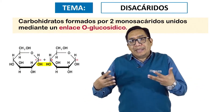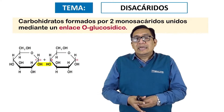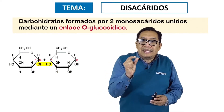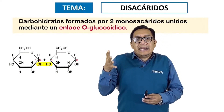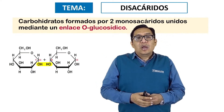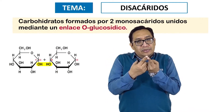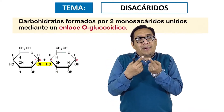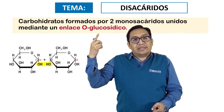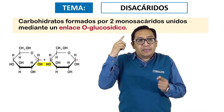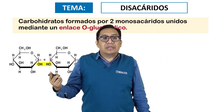Por ejemplo, el almidón, el glucógeno, la celulosa, entre otros más, tienen unos pequeños ladrillos básicos que los forman de manera repetida y a eso se le llaman monosacáridos. Cuando esos monosacáridos se unen de a dos mediante un enlace covalente llamado enlace glucosídico, esa unión recibe el nombre de disacáridos.